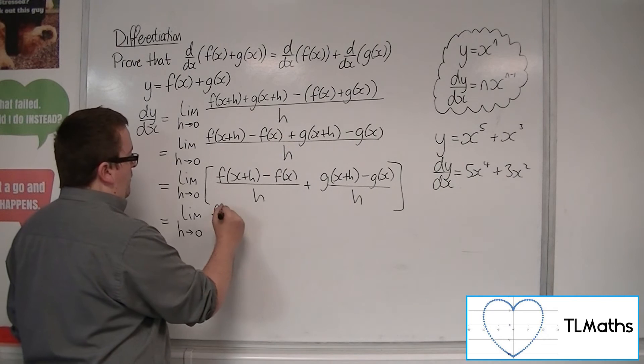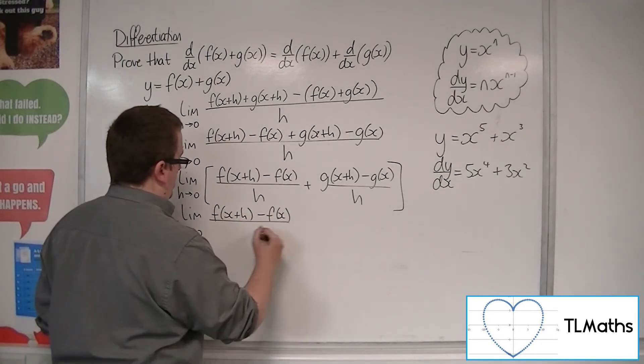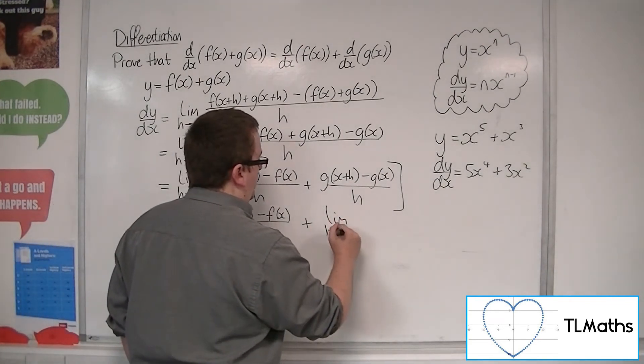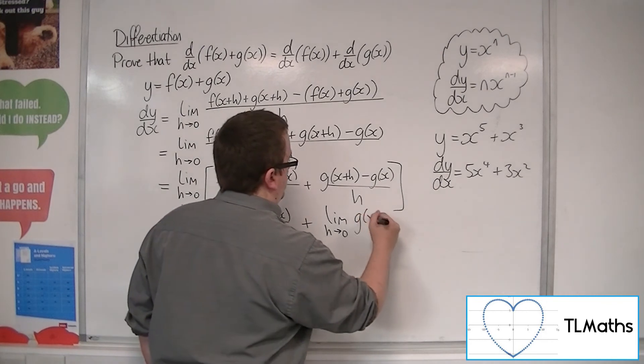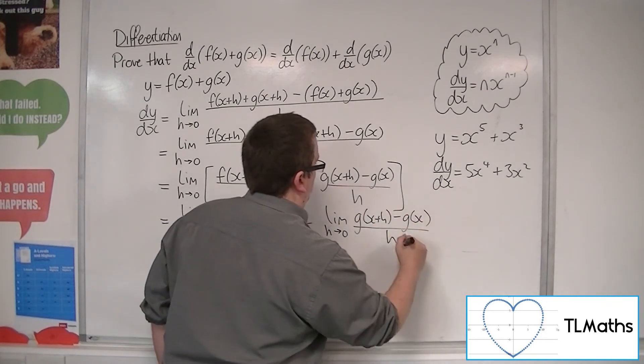But I'm going to make the jump. So we've got the limit of f of x plus h, take away f of x, over h. And I'm going to have plus the limit as h tends to 0 of g of x plus h, take away g of x, all over h.